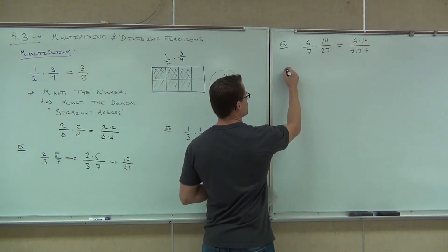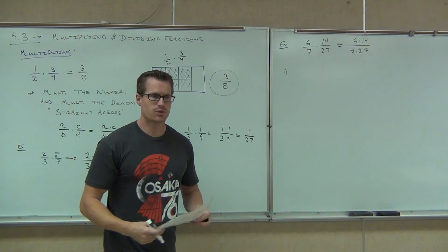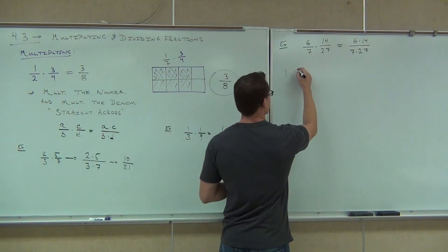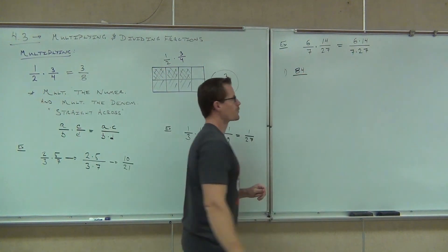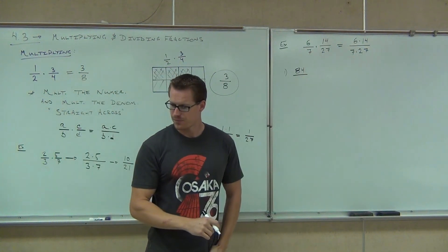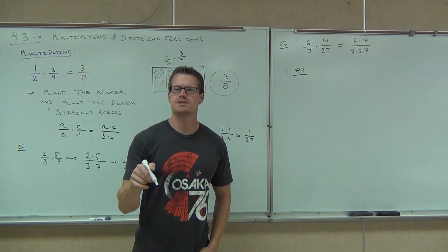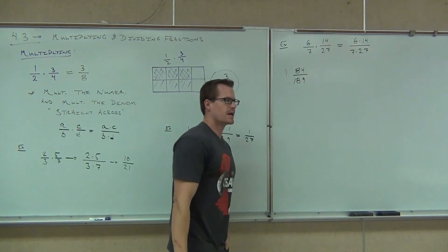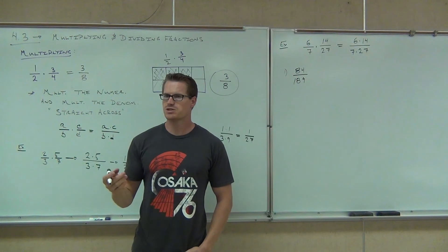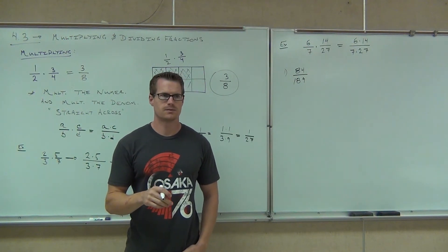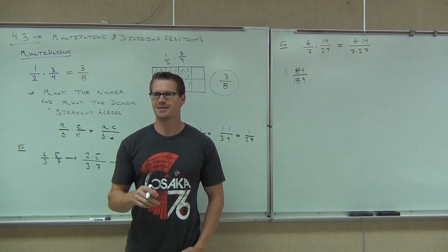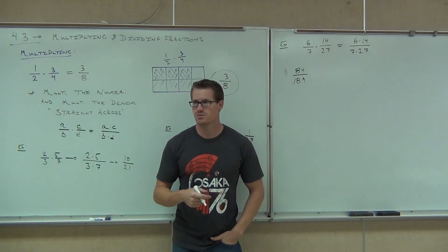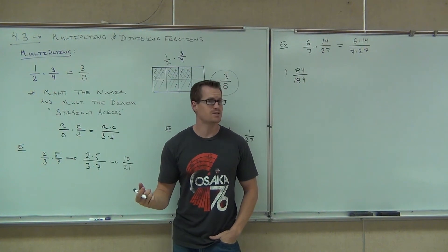Now, you have a few options on how to accomplish the rest of this problem. Option number one is you do what we did over here and just multiply those numbers. If you multiply those numbers, so option one: We do 6 times 14. We do 7 times 27. What's 6 times 14? Anybody know? Eighty-four. Eighty-four. Over 7 times 27. Seven times twenty-seven. One hundred eighty-nine. You could get 84 over 189. However, can you simplify 84 over 189? Yes, absolutely you can. That can be simplified. However, that's a pretty big fraction, right? So you might have to use your prime factorization to do that. That might take you some extra time.